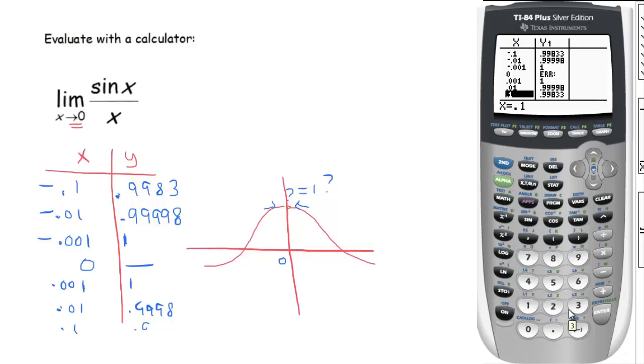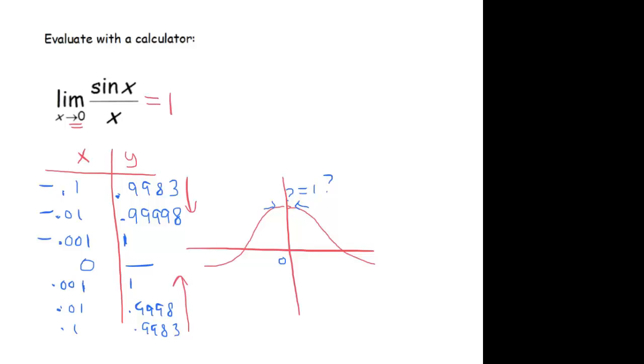I think it's pretty clear after all this data collection that as you approach 0 from the right and the left, this very important limit that comes up a lot is equal to 1. So even though there's a hole here, this value is in fact 1. So that limit is equal to 1. That's something you'll want to know for future reference.